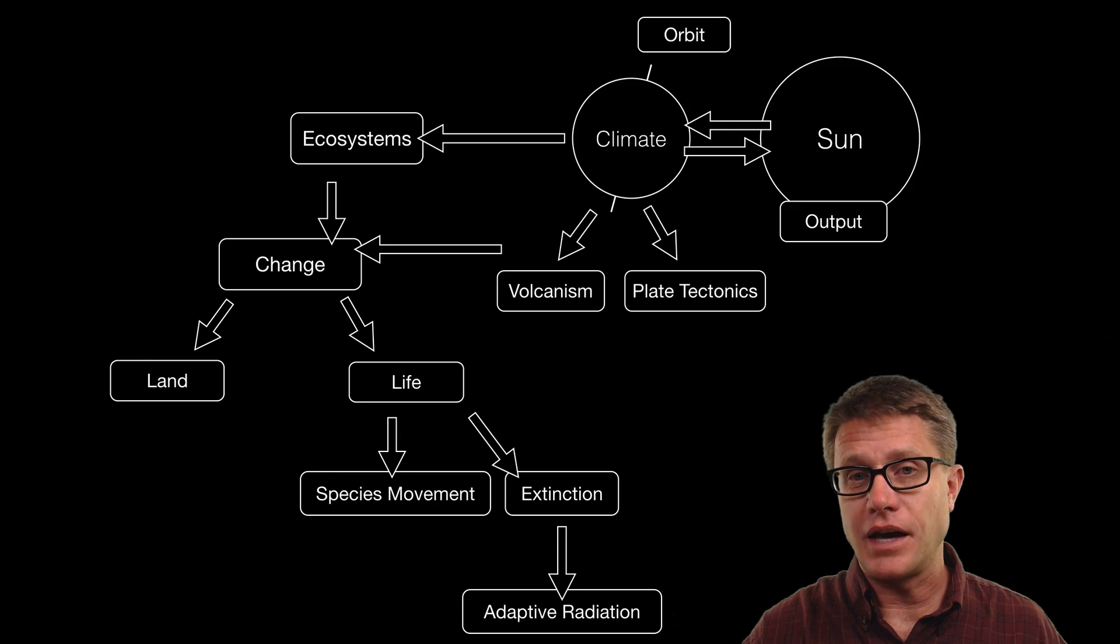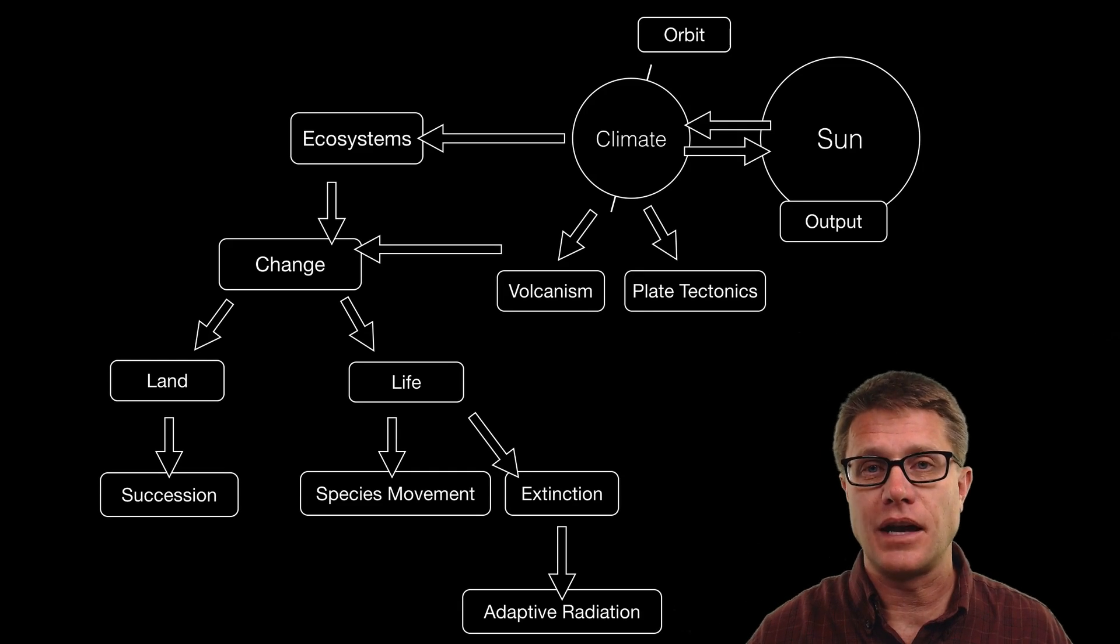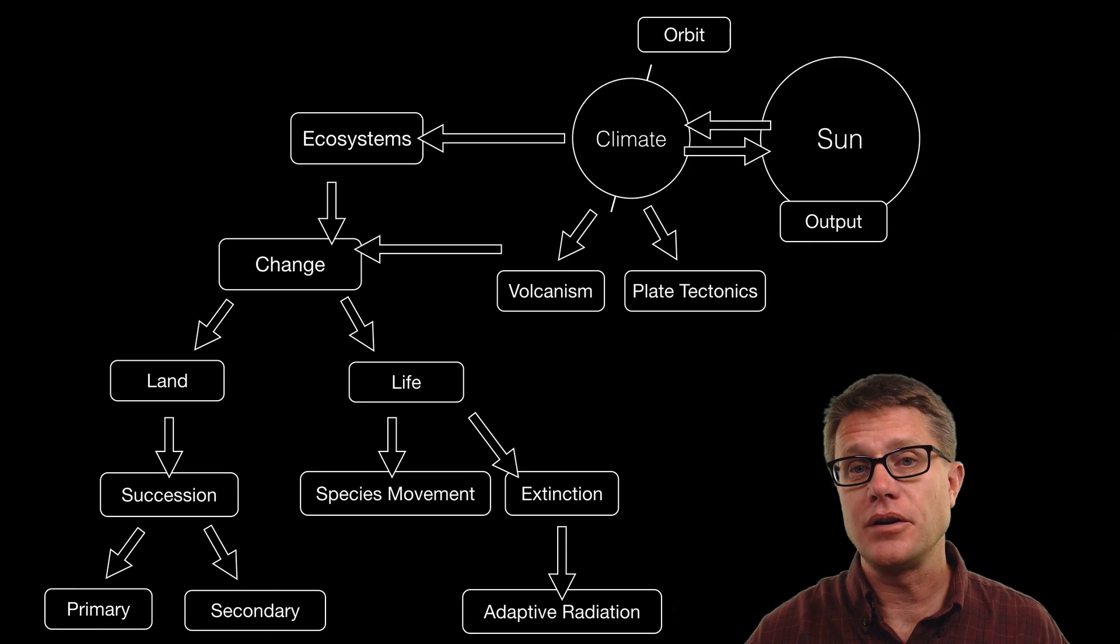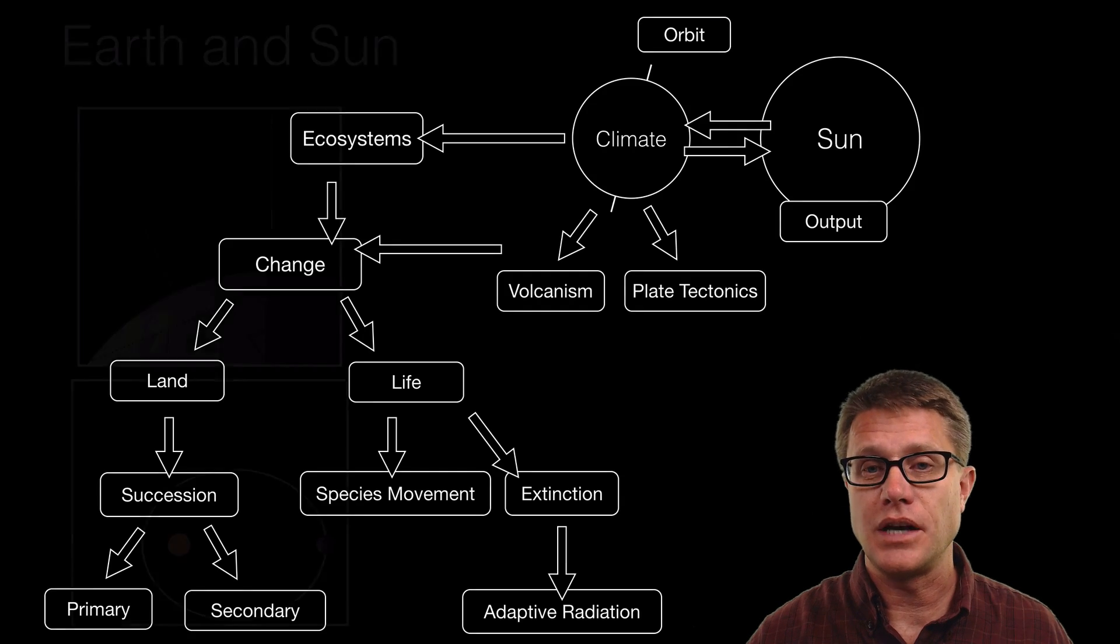Now it also affects the abiotic factors, so the land on our planet. And so what happens after the land is destroyed or changed is we have succession as life moves back into that area. It can be either primary or secondary. In primary succession the soil in the community is gone. And secondary the soil in the community actually remain.